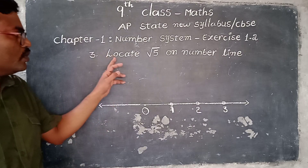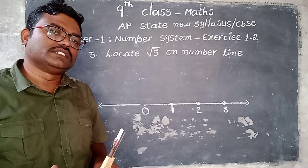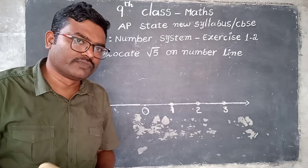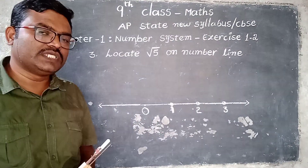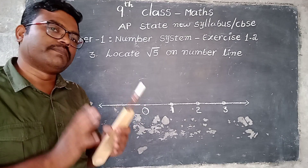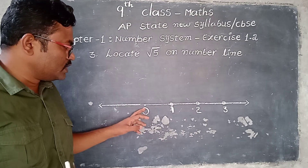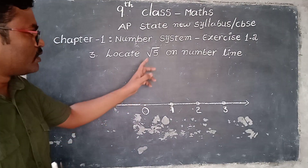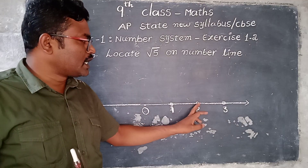See the third problem here: locate root 5 on the number line. We locate integers and rational numbers on the number line in previous classes. In this chapter, the irrational number, that is root 5, is an irrational number. We need to show it and represent it on the number line. The number line goes 0, 1, 2, 3 and so on. Root 4 is exactly equal to 2, so root 5 comes between 2 and 3.